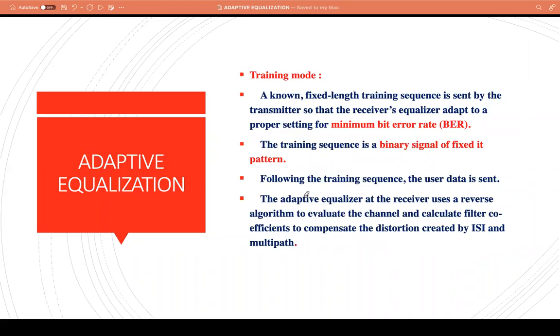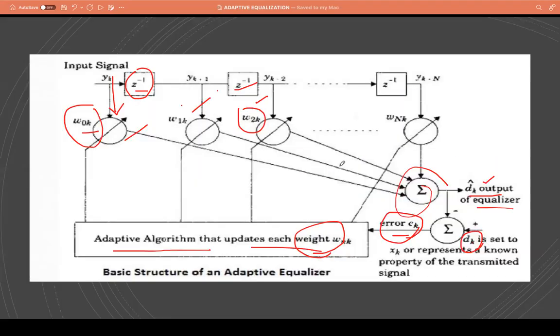In case of training mode, what we usually do is before sending the actual data, before sending the actual signal, we send a training sequence so that the adaptive algorithm tries to get the first set of weights.